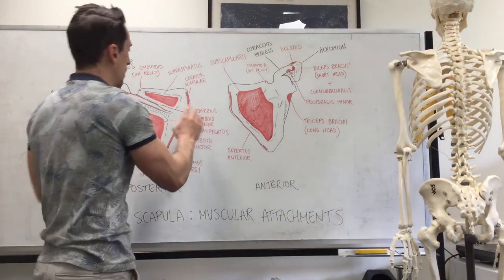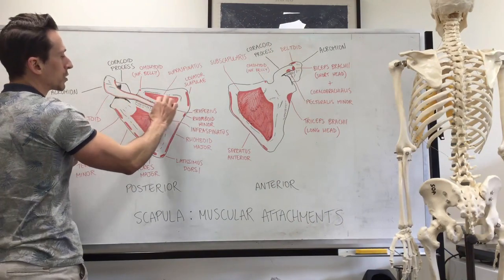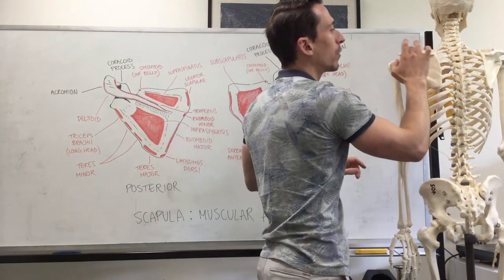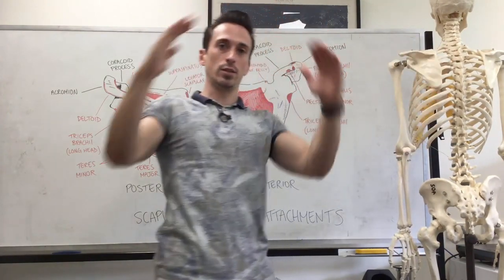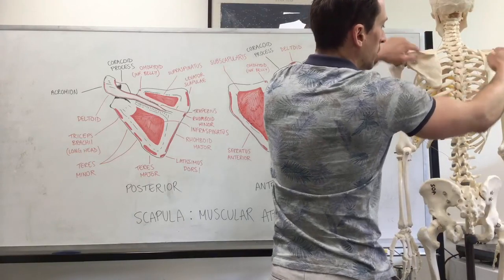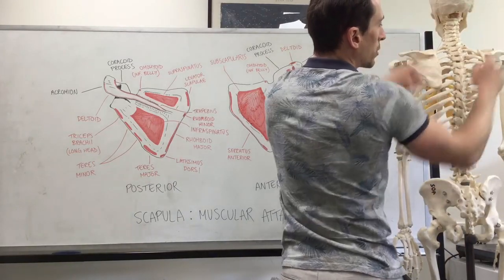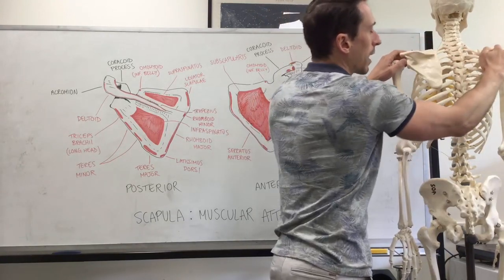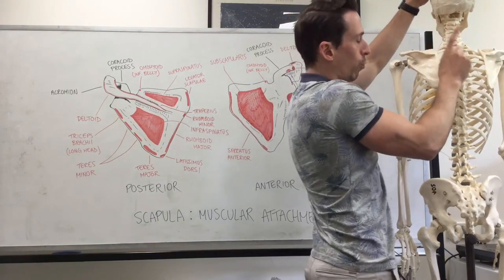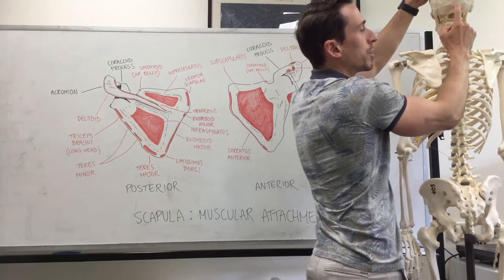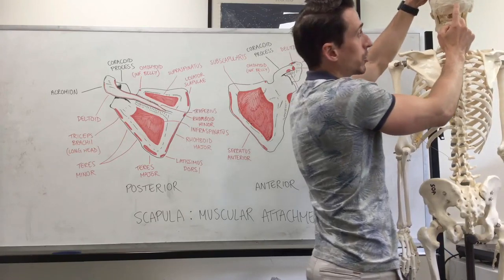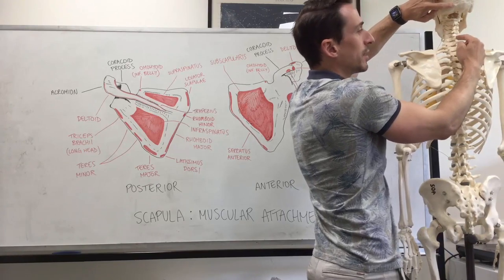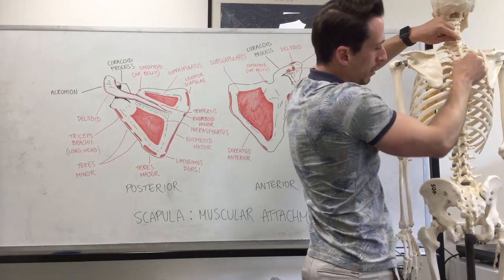When we look at trapezius, you can see there's a huge long attachment on the spine of the scapula — specifically the superior aspect of the spine of the scapula. The trapezius is named because of its diamond shape. Its insertion point is the spine of the scapula, and one origin is the external occipital protuberance, a little bump at the back of the skull.